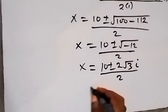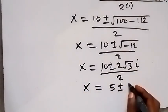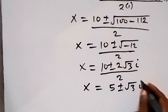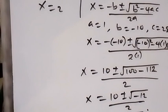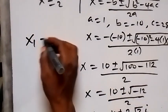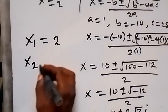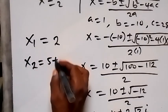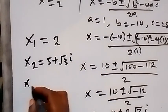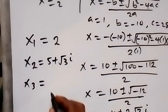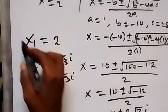So x equals 5 plus or minus root 3 times i. We can conclude that the solutions are: x₁ equals 2, which is a real solution; x₂ equals 5 plus root 3 i, a complex solution; and x₃ equals 5 minus root 3 i, also a complex solution.